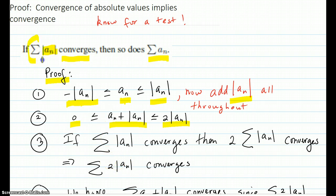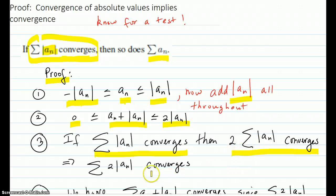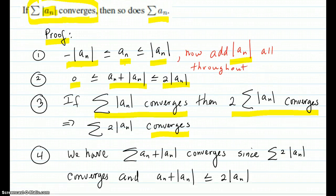We have our given: if the series Σ|a_n| converges, then certainly so does two times it, because if the series of absolute values converges to some number, then two times it converges to two times that number. So it converges — no problem there.